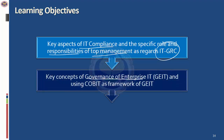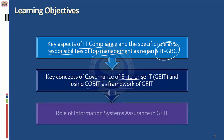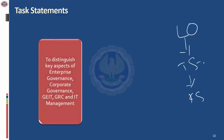We'll understand the key concepts of governance, especially using COBIT as the framework, and how information system assurance is done from the perspective of GEIT. The task statements require you to distinguish between enterprise governance, corporate governance, GEIT, GRC, and IT management. You should know whether an organization that says it has governance is actually implementing governance or just managing IT. The second aspect is examining how IT is being used, the role of IT in the enterprise, the IT strategy, and aligning IT with business strategy.